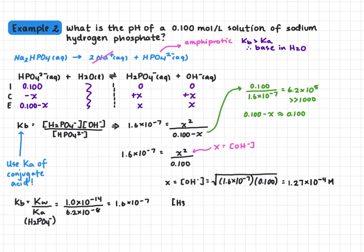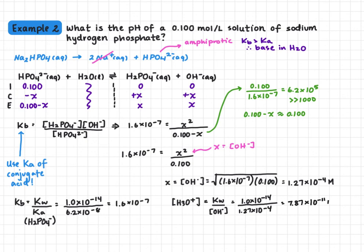This time I'll go through hydronium to show both methods. Hydronium concentration equals Kw divided by the hydroxide ion concentration: 1 × 10⁻¹⁴ / 1.27 × 10⁻⁴ = 7.87 × 10⁻¹¹. We use that to find pH — taking the negative log — and we get a pH of 10.104.